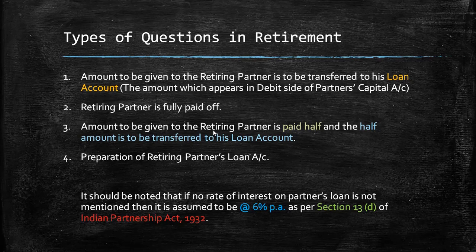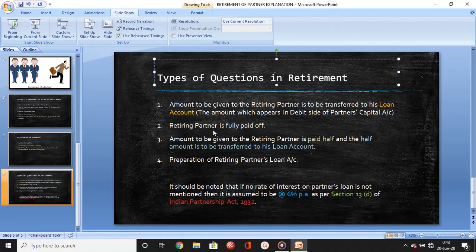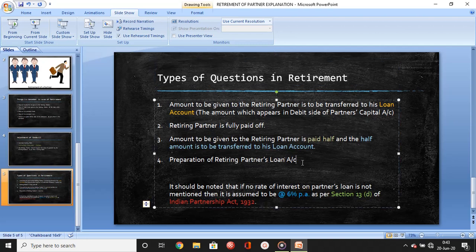In the beginning you will see Case 1, Case 2, and then Case 3. As we move further, there is a fourth type of case also: you have to prepare the partner's loan account until it is fully paid off. This type of question will come at the end of the chapter, not the beginning, because there are many adjustments - goodwill adjustment, capital adjustment, and so on.